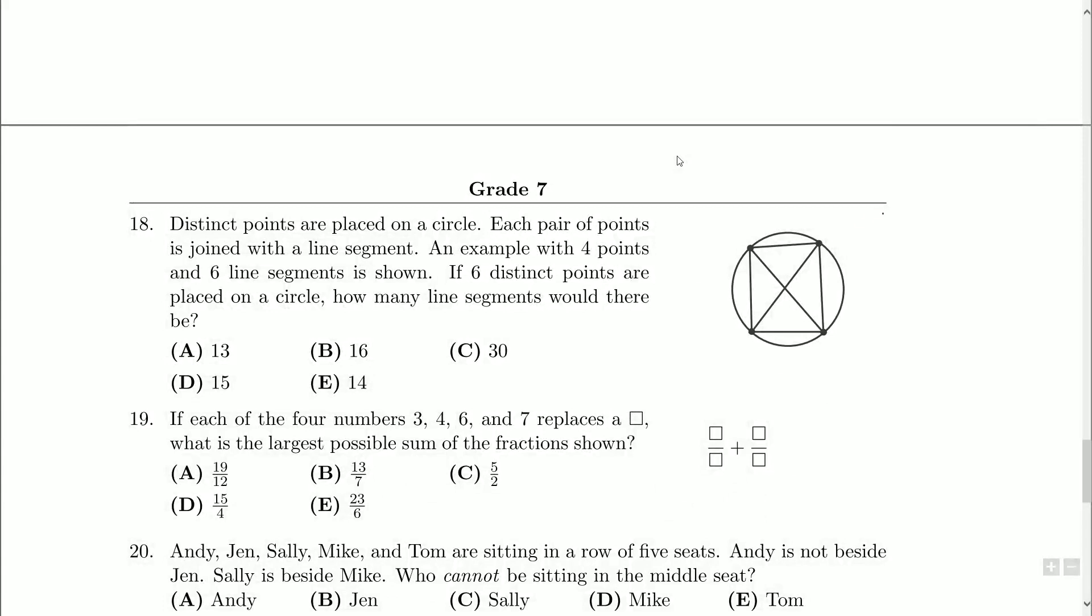This sort of looks like an optical illusion. I'm sure this is a circle, but when I look at it, it's not bulging the right way. Anyway, each pair of points is joined with a line segment. An example with four points and six line segments is shown. If six distinct points are placed on a circle, how many lines would there be?